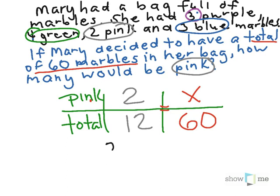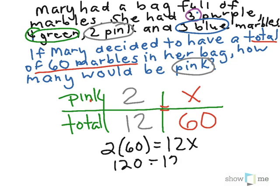To set up my math, two times sixty equals twelve x. Two times sixty is a hundred and twenty equals twelve x. Divide both sides by twelve.